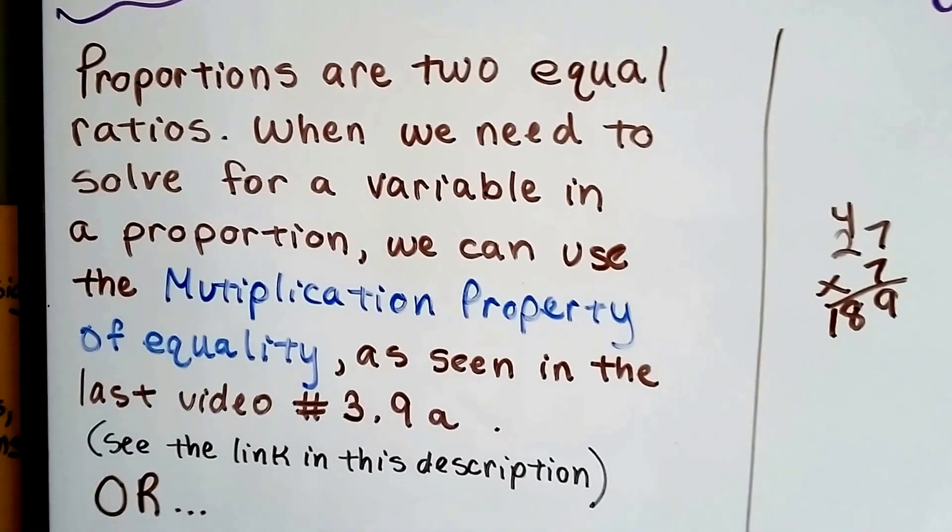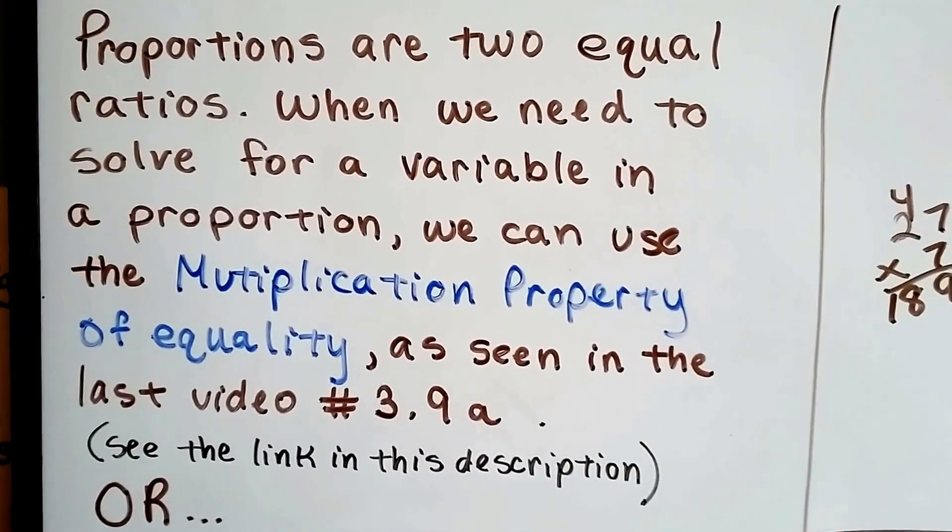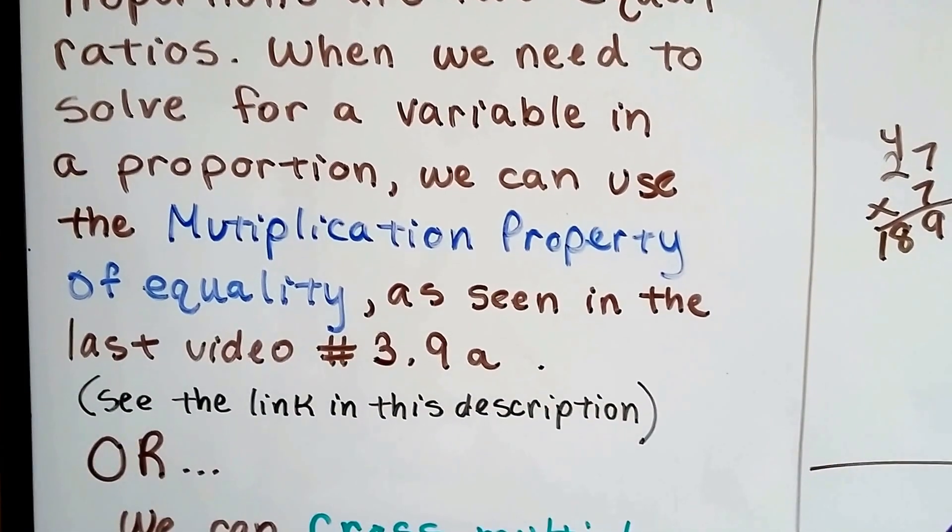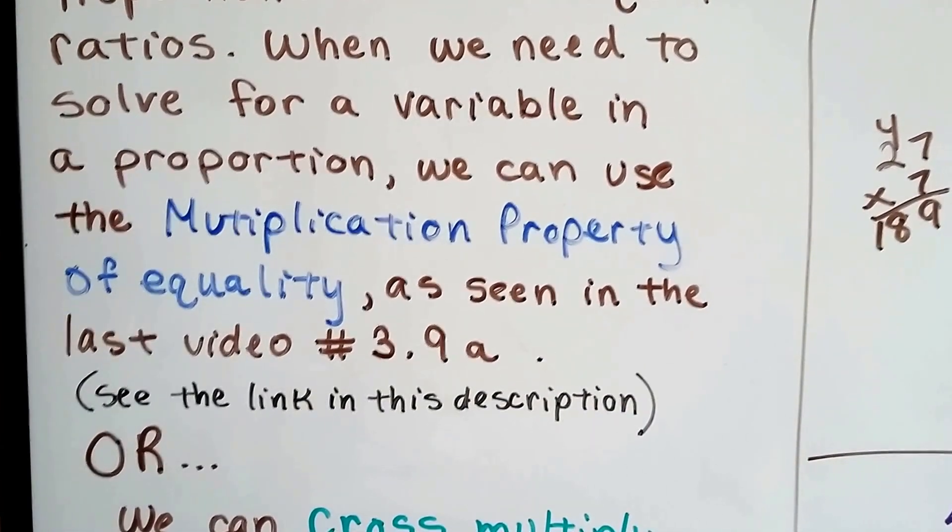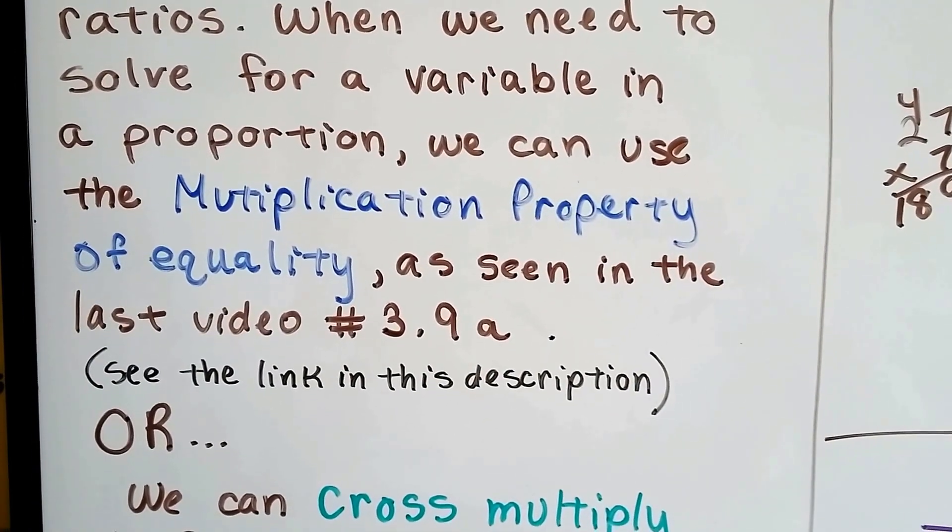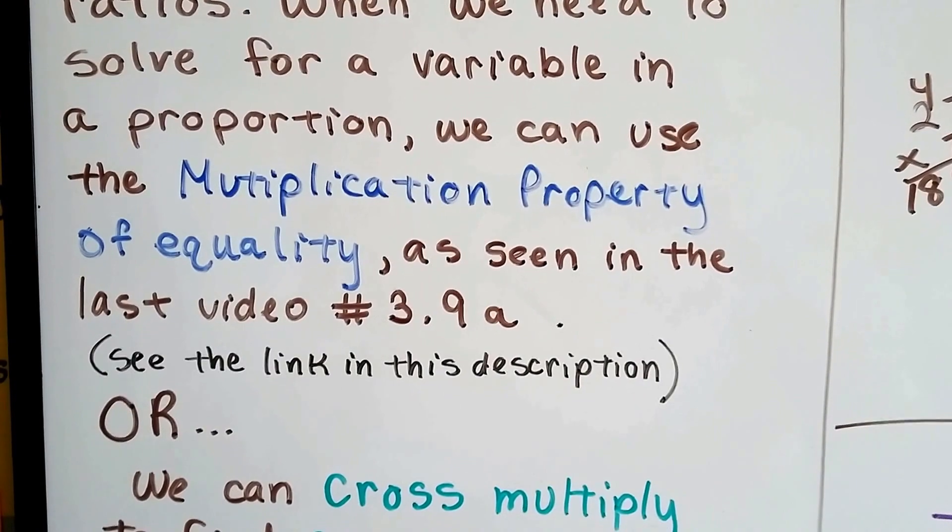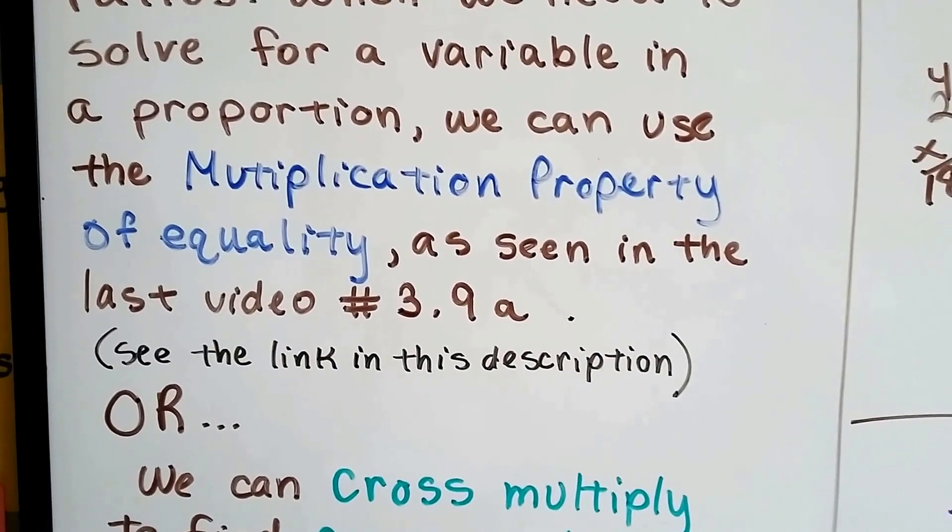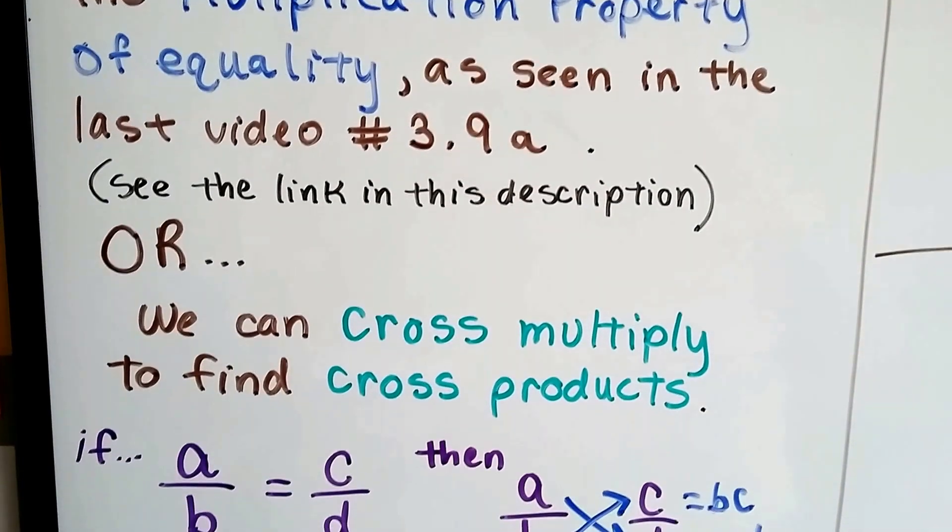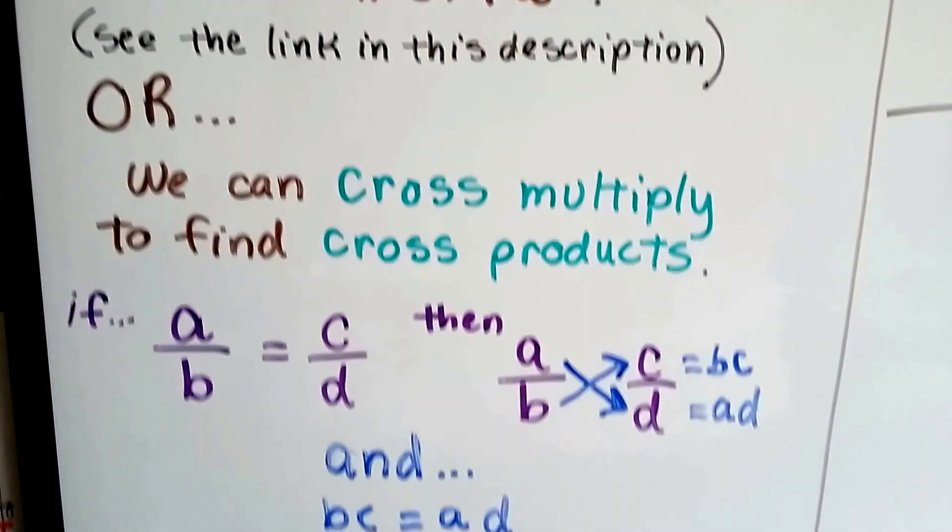So proportions are two equal ratios. And when we need to solve for a variable in a proportion, we can use the multiplication property of equality. We can multiply both sides of the equation by a reciprocal, as seen in the last video, number 3.9a, and there's going to be a link to that video in the description of this one in case you missed it. We can cross-multiply to find cross-products.